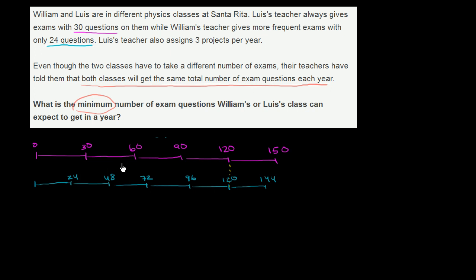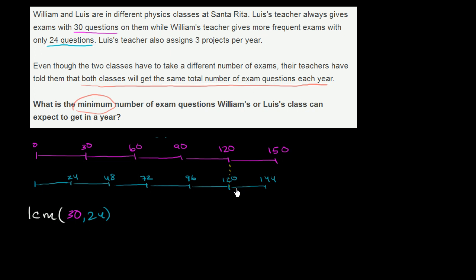Notice they had a different number of exams — Luis had four exams, while William would have to have five exams. But that gets them both to 120 total questions. Thinking of it in terms of math notation, or the least common multiple notation we've seen before, this is really asking us: what is the least common multiple of 30 and 24? And that least common multiple is equal to 120.